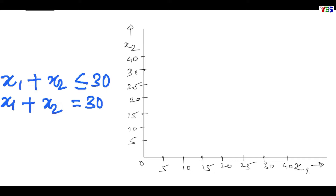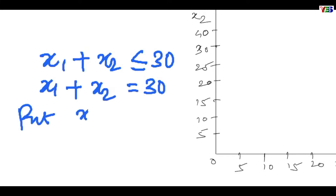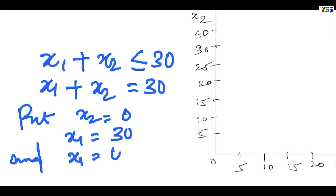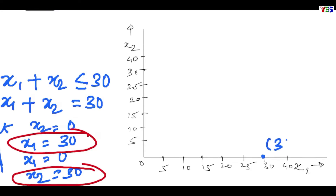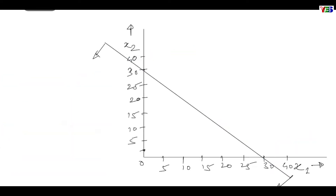We need two points to draw a line. So let us take 0 for one axis at a time and find out the value for the other axis. Put x2 equal to 0 and you will find x1 equal to 30, and by putting x1 equal to 0 you will find x2 equal to 30. So we have two points: (30, 0) and (0, 30). Now draw a line by joining these two points.